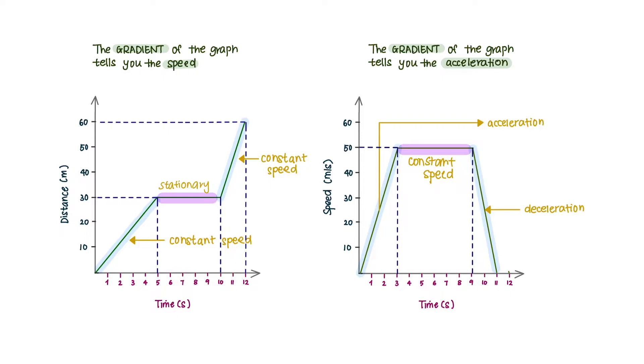There are two types of graphs that you should master in this chapter: a distance-time graph and a speed-time graph. Let's look into distance-time graphs first.